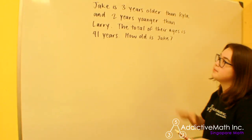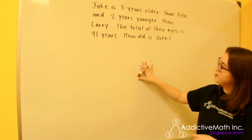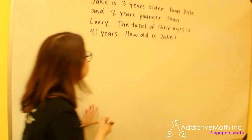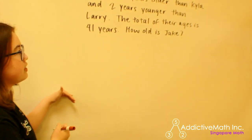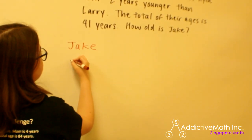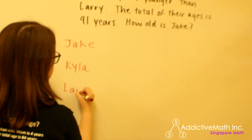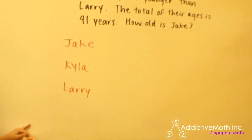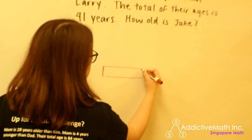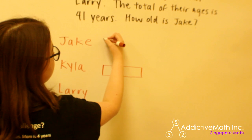The first thing I'm going to do is read back through the first sentence and draw out a picture to describe it. So Jake is 3 years older than Kyla and 2 years younger than Larry. I'm going to draw out bars to represent the ages of each of the three kids — Jake, Kyla, and Larry. Jake is 3 years older than Kyla, so I'm going to draw a bar to represent the age of Kyla, and then another bar for Jake that's 3 years more than what Kyla is.